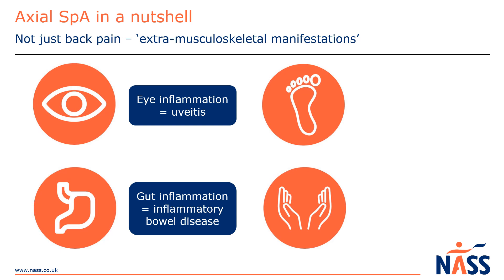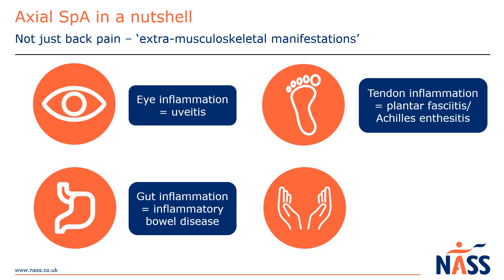As inflammation can occur anywhere where a tendon or ligament attaches to a bone, axial SpA can cause foot problems, including plantar fasciitis or Achilles problems, leading to swelling, pain and stiffness. Do mention these symptoms to your doctor, and you can also see a podiatrist for specialist advice.